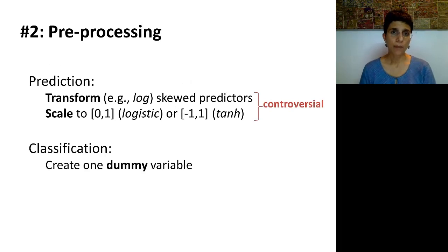In step number two, we talk about pre-processing the raw data. If we have a predictive task or a numerical outcome, then typically we're going to transform the outcome variable if it's very skewed. In regression, we typically take a logarithm transform, and that is also common when using neural nets. If we're going to be using a logistic or a hyperbolic tangent activation function, then it is also typical to scale either to 0, 1, or between negative 1 and 1.